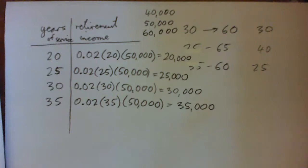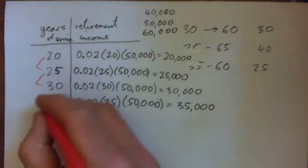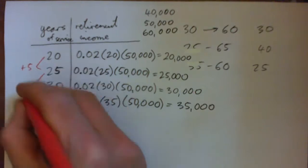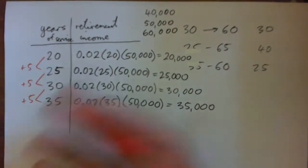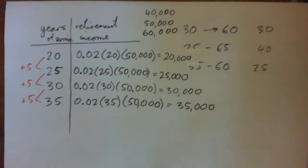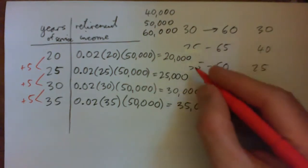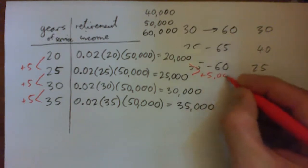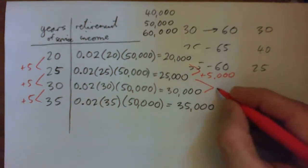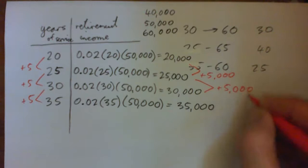So what I want you guys to notice is that as the years of service go up by the same amount, up in fives, and you guys could have different numbers, you could have like your years of service going up in ones or whatever, you'll notice that the retirement income is going up by five thousand dollars each time. Okay, right.